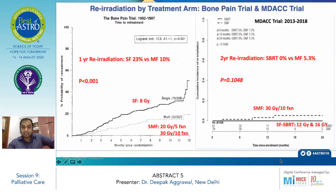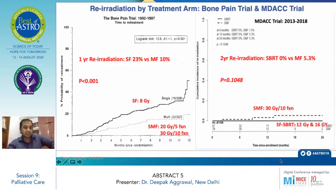Assessing the re-RT rate, the 2-year re-RT rate in the SBRT arm was 0% in the current study, compared to 5.3% in the multi-fraction arm, though this difference was not statistically significant. Comparing to the previous bone pain trial from 1992 to 1997, the 1-year re-RT rate was higher in single fraction compared to multi-fraction. One possible reason is that the lower BED dose was given in the historical single fraction arm, whereas the current study delivered a higher BED, which may have translated to equivalent results between SBRT and multi-fraction.